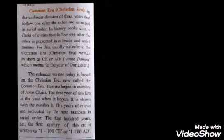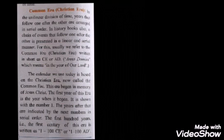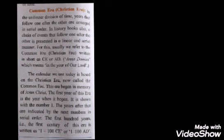This era is now called the Common Era. It began in memory of Jesus Christ. The first year of this era is shown with the number one, and the years after that are indicated in serial order. The first hundred years — the first century of this era — is written as 1 to 100 CE, or 1 to 100 AD.